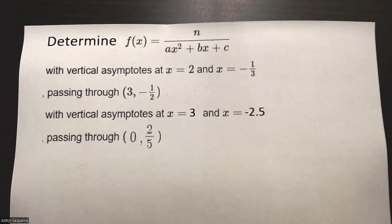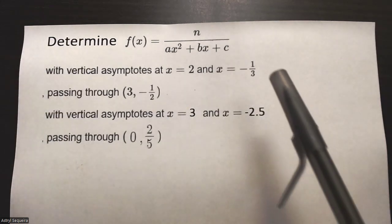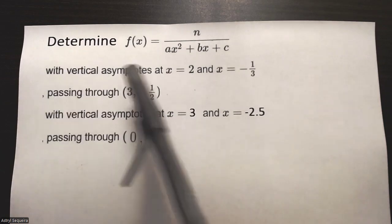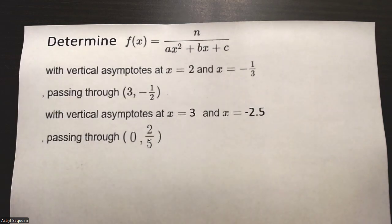Alright, in this video we want to find the equation of the rational function that has these vertical asymptotes and passes through the point. We have two different examples over here.